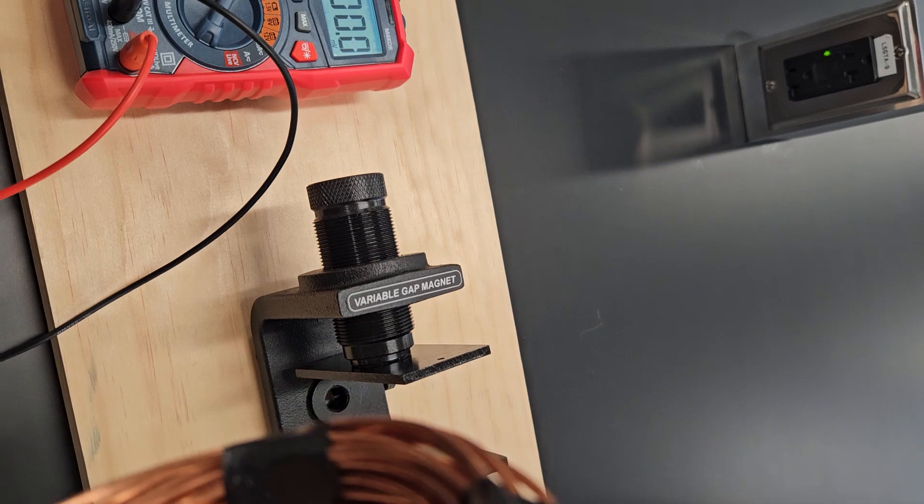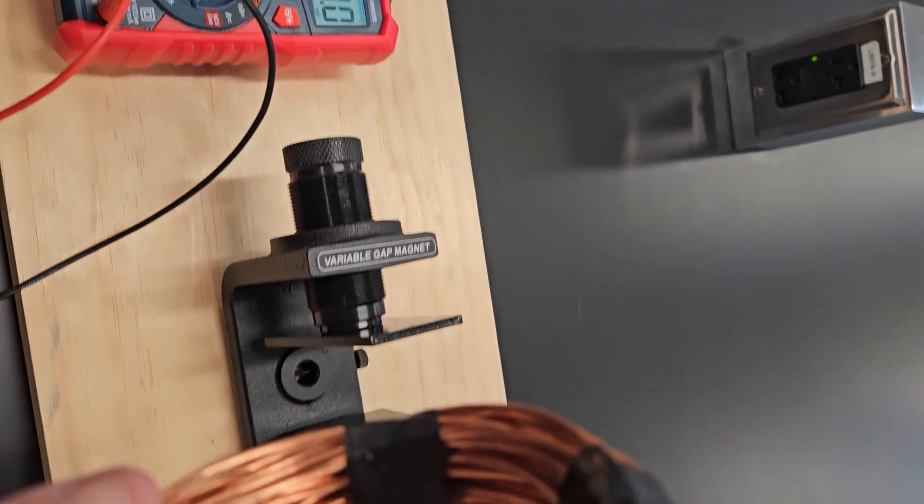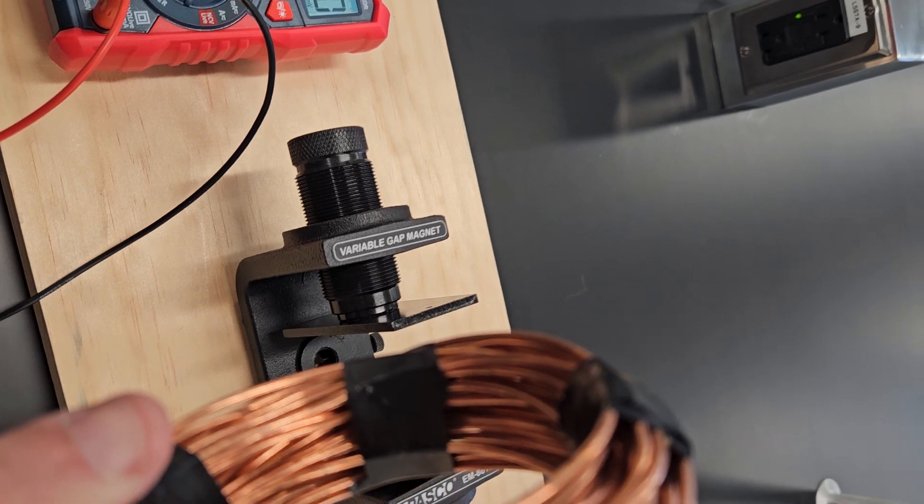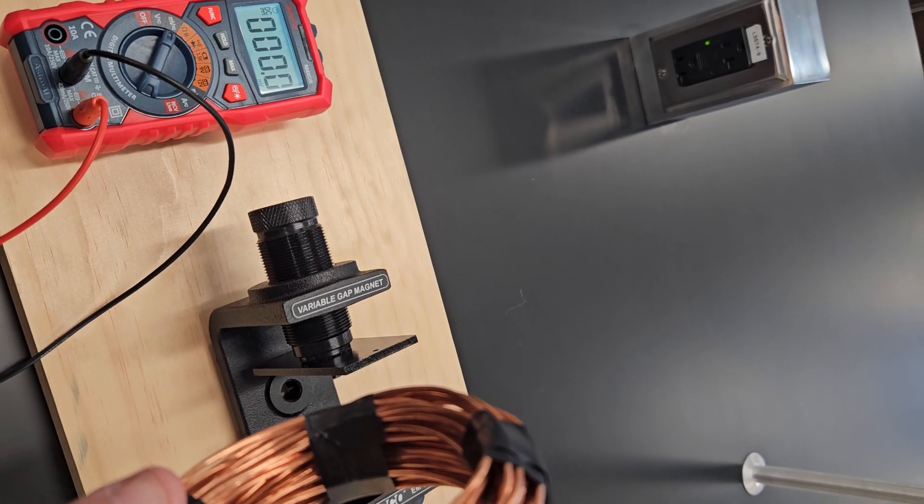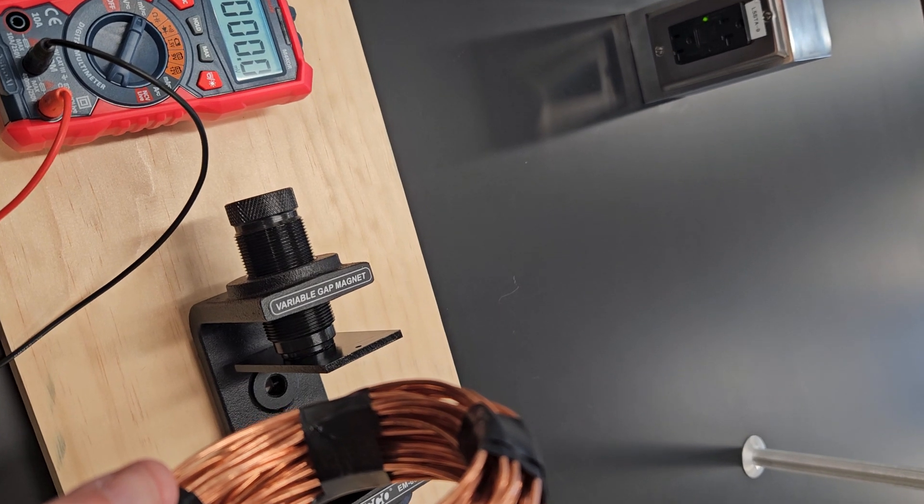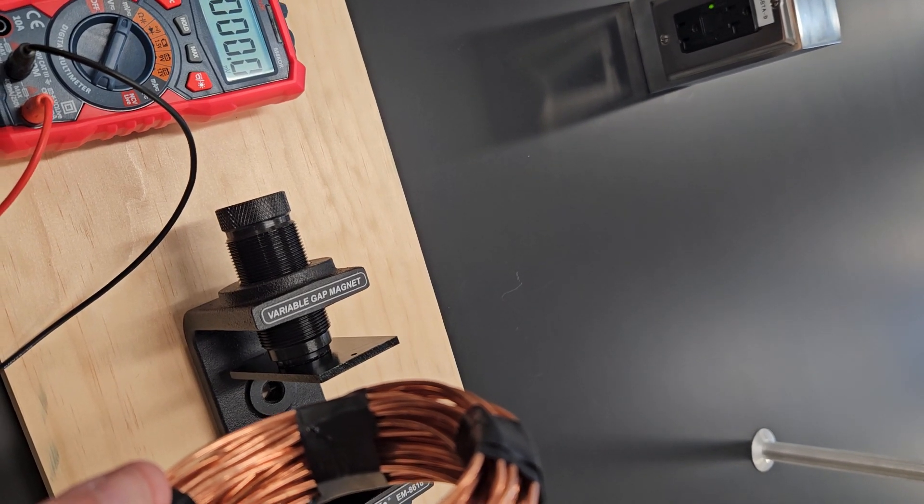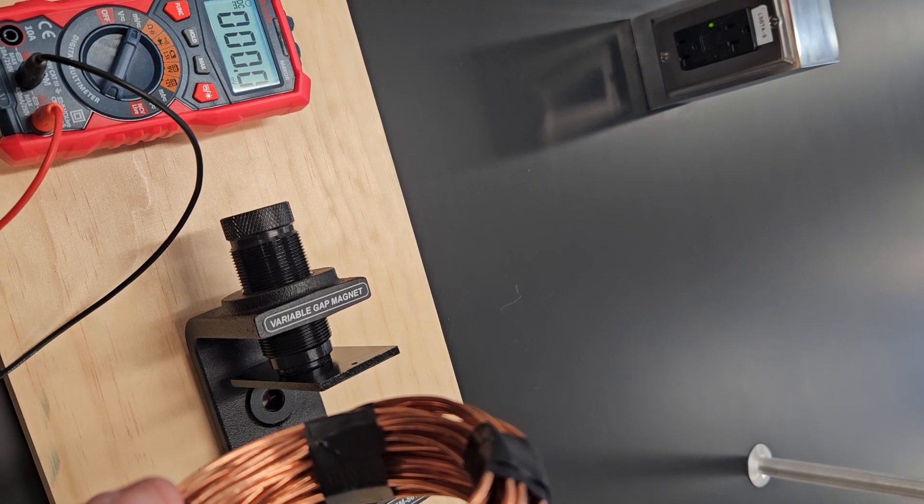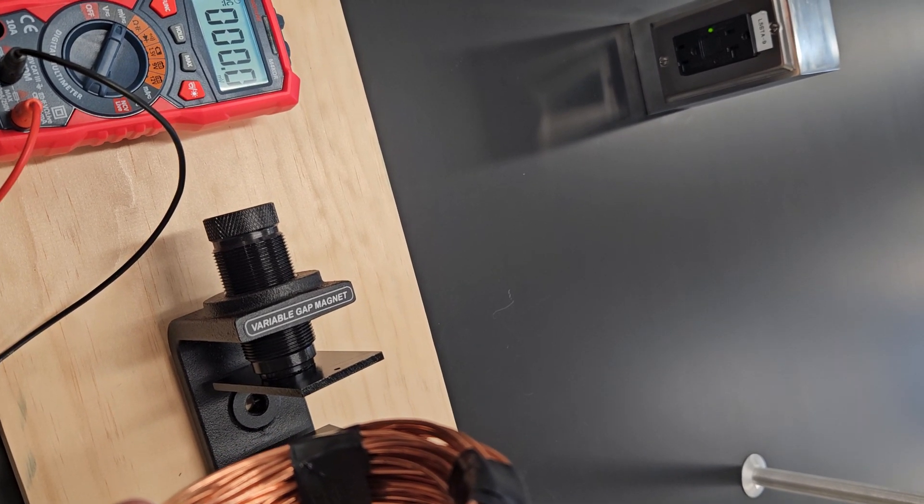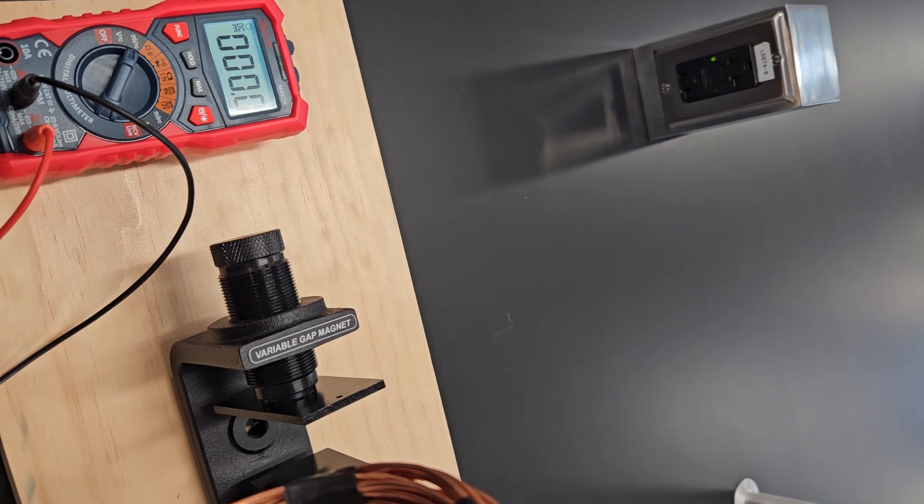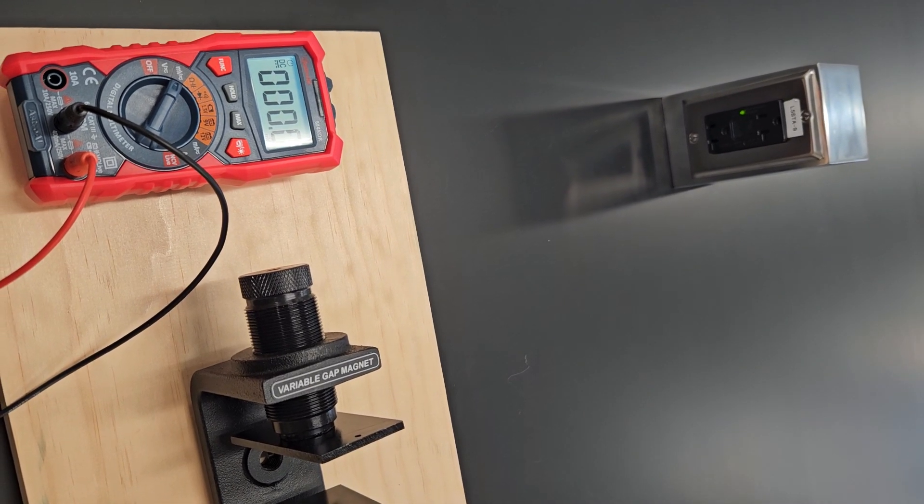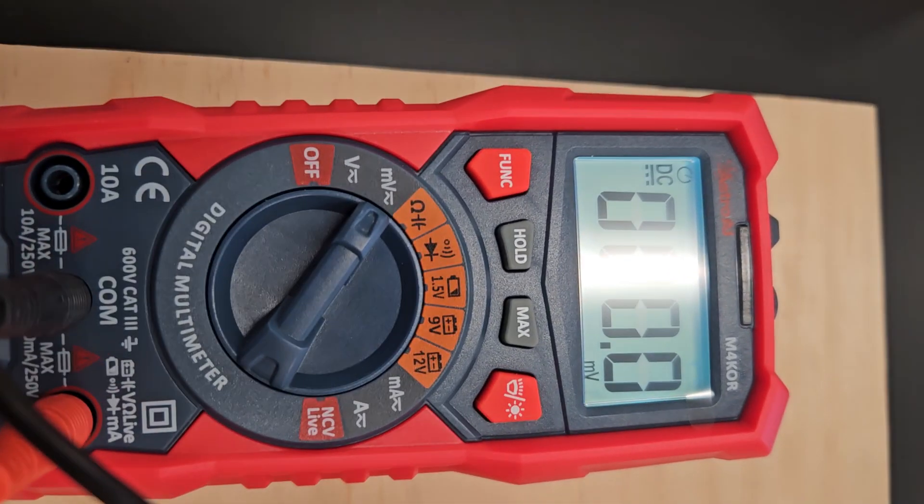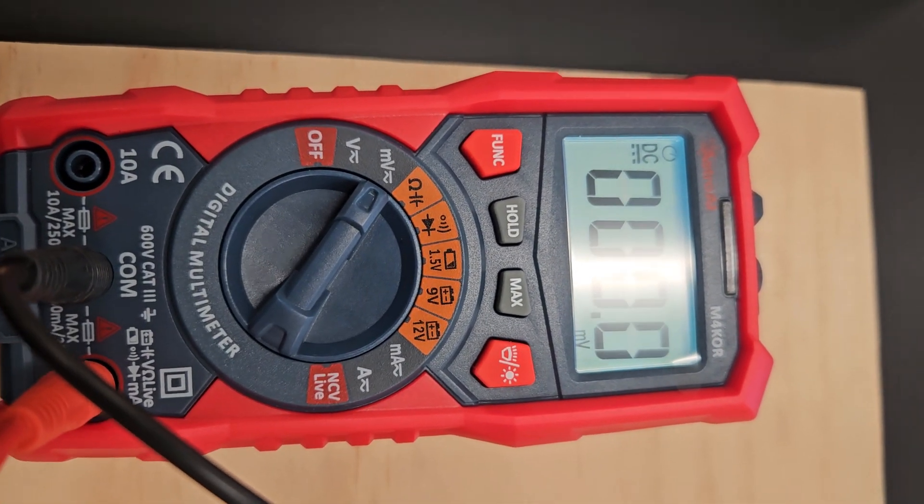So I will just move this coil toward the magnet, and as I move the coil toward the magnet you will see how due to the variation in the magnetic field passing through the coil there will be an induction of electromotive force that will be measured by the digital multimeter that in this case is working as a voltmeter.